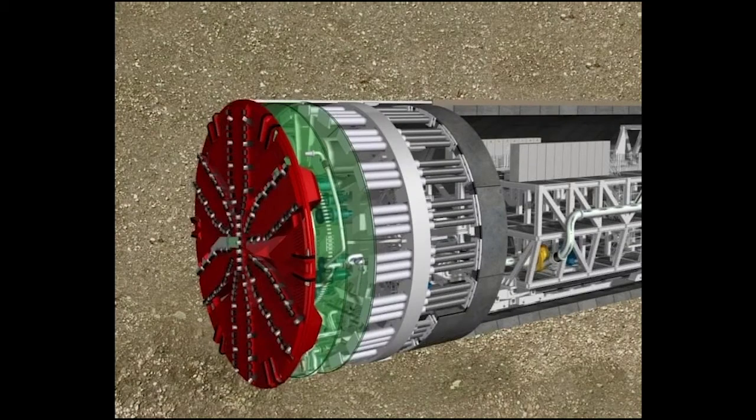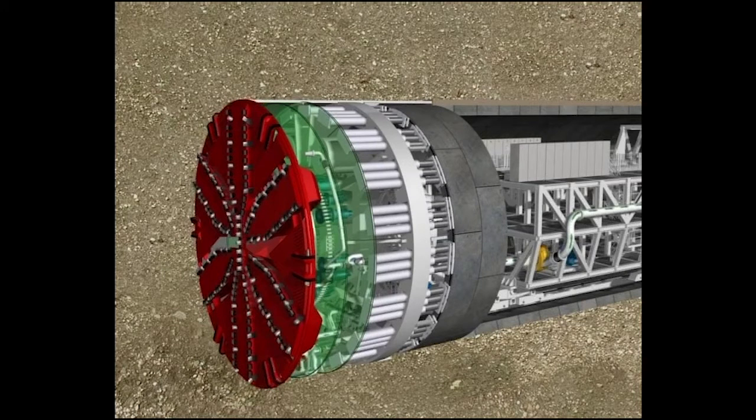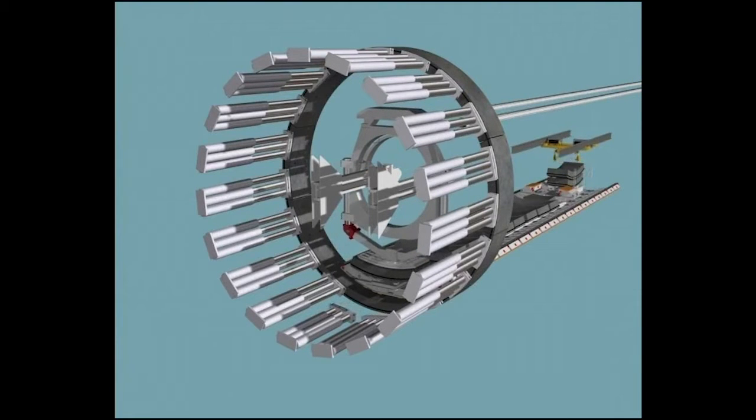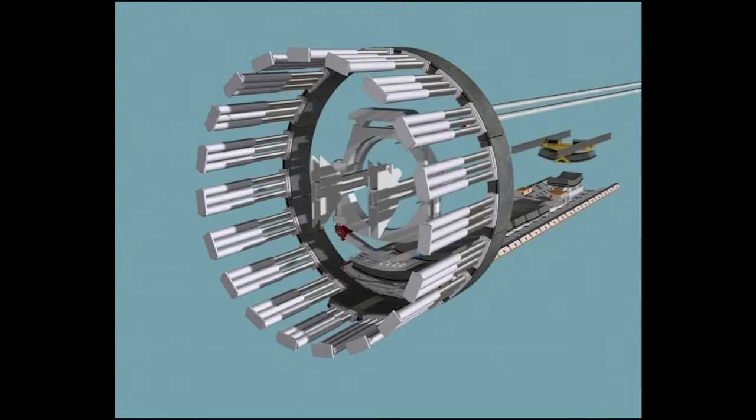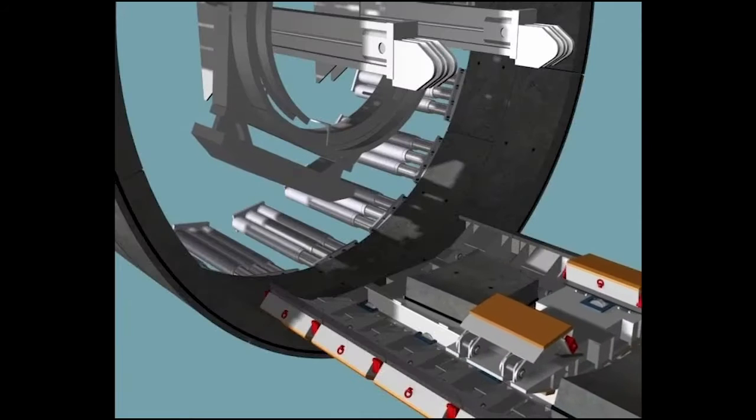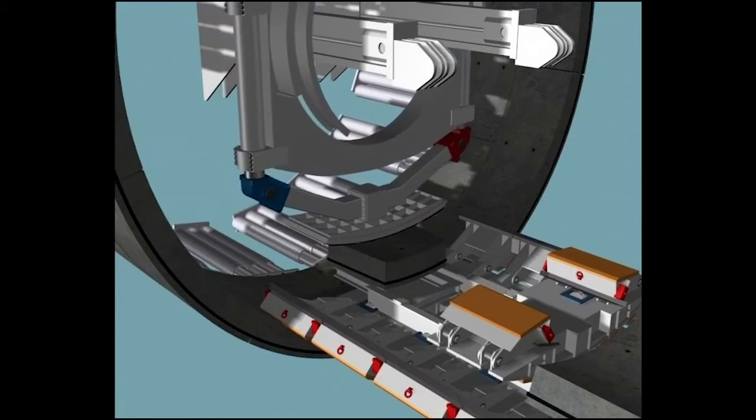The TBM operates in two intervals. The segment ring is installed during the first interval. The concrete segments are provided by the segment feeder and lifted by the erector. In the installation area, the hydraulic cylinders are temporarily retracted in order to provide enough space for the new segment. The segments are positioned to the millimeter and secured by the cylinders immediately after their installation.